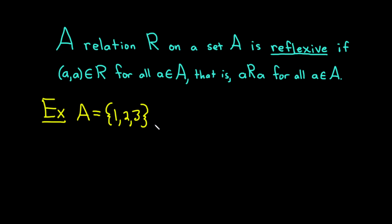And then we're going to let R be a relation on A. Recall that a relation on A is just a subset of A cross A. So one such subset of A cross A would be the set containing the elements, let's say (1,1) and (2,1).